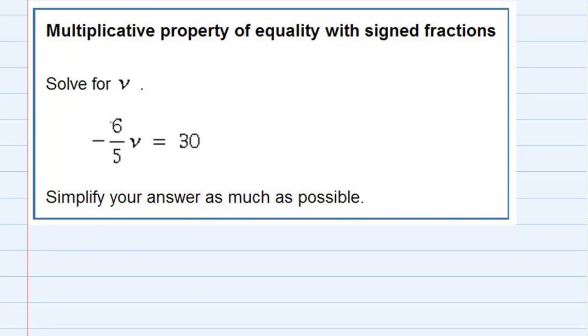Multiplicative property of equality with signed fractions. We're asked to solve for v, and on the left hand side with the v there is this negative six fifths coefficient. And I would like to get rid of that negative six fifths so that I would have the v by itself.